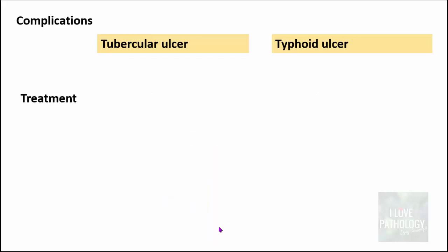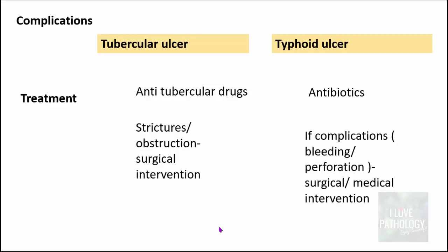Regarding treatment: tubercular ulcers are treated with anti-tubercular drugs, whereas typhoid ulcers are treated with antibiotics. If there are complications such as strictures or obstruction in tubercular ulcers, or bleeding or perforation in typhoid ulcers, surgical intervention is required.